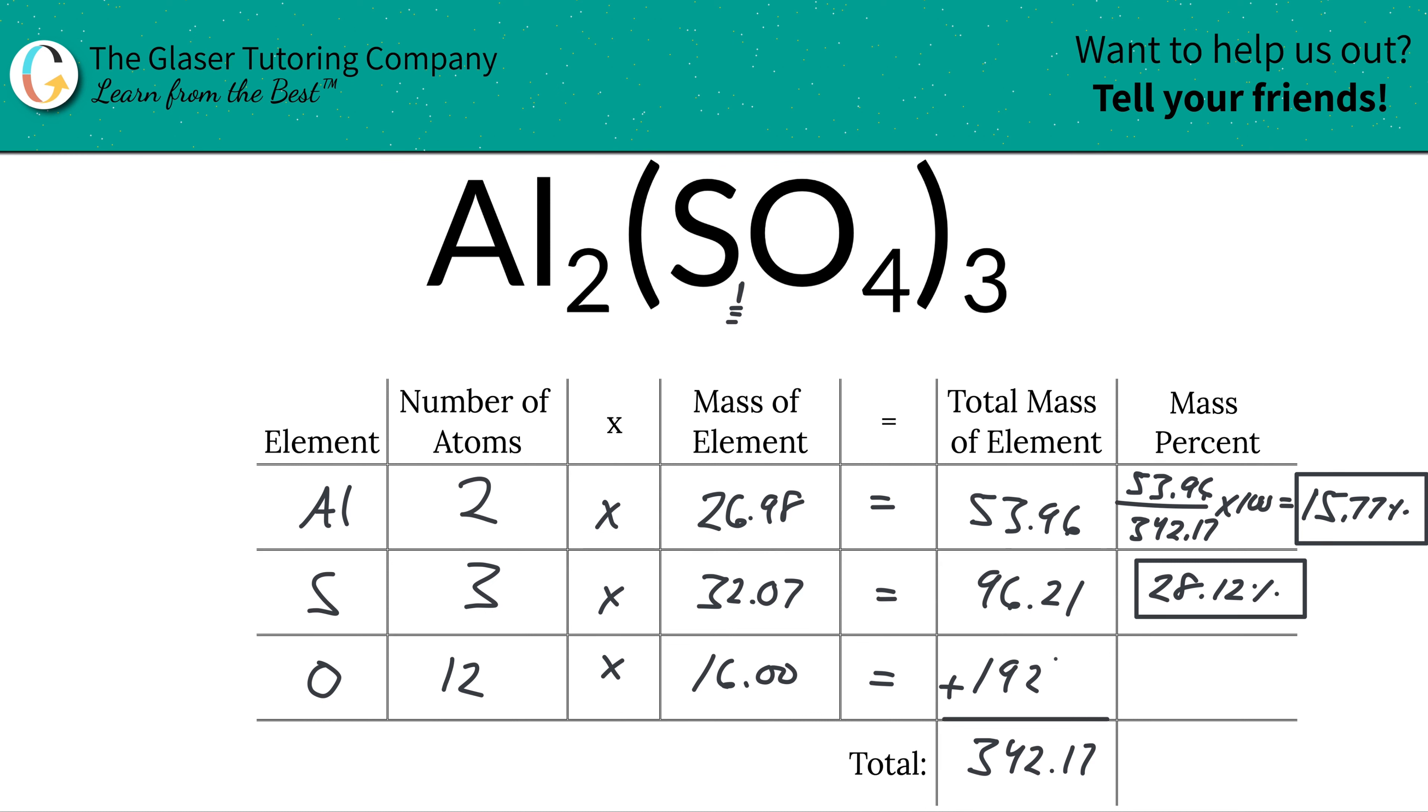And literally the same thing now for oxygen. Take the 192 divided by 342.17, multiply it by 100, and you're going to come up with a value of about 56.11%. And to make sure you've done this correctly, you can always add up these 3 percentages. And when you do that, you should get a value of 100%. It's just a way to check yourself before you wreck yourself.